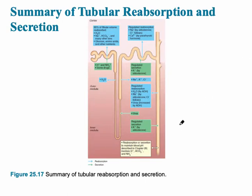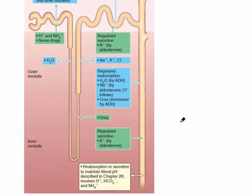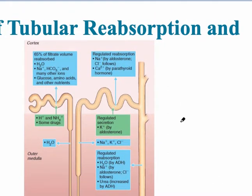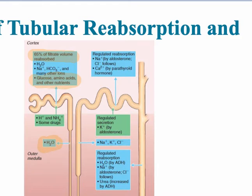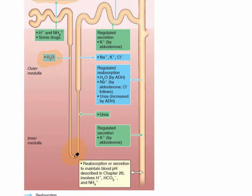This graphic does a nice job of showing what happens in the general regions. During the proximal convoluted tubule, 65% of filtrate volume is reabsorbed — filtrate being everything formed through glomerular filtration, the forced movement of liquids across the glomerular membrane — and notice that all nutrients are reabsorbed here. Water is reabsorbed in the descending limb of the loop of Henle, so it's highly concentrated at the hairpin turn. The ascending limb is impermeable to water, so only ions like sodium, potassium, and chloride are reabsorbed.